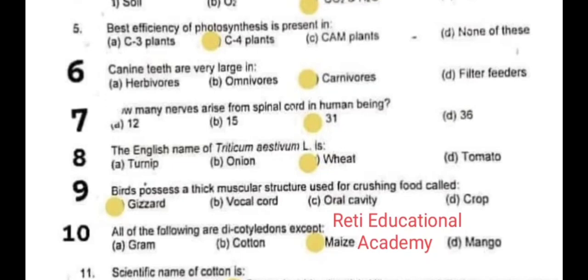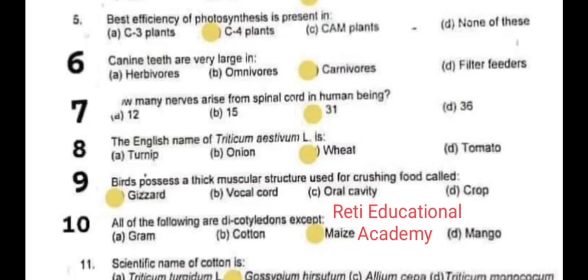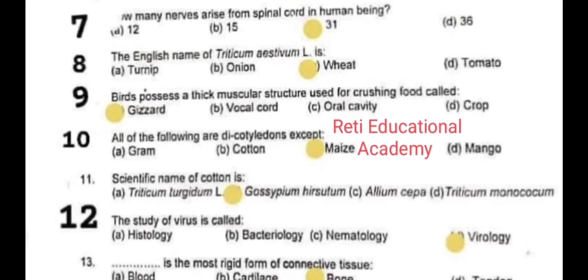Question 6: Canine teeth are very large in C – Carnivores. Question 7: How many nerves arise from the spinal cord in human beings? The correct answer is C – 31. Question 8: The English name of Triticum aestivum L. is C – Wheat. Question 9: Birds possess a thick muscular structure used for crushing food called a gizzard. Question 10: All of the following are dicotyledons except C. Question 11: Scientific name of cotton is Gossypium hirsutum.